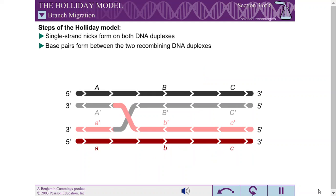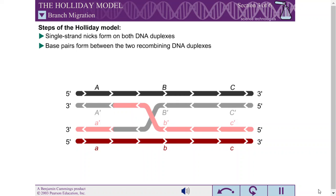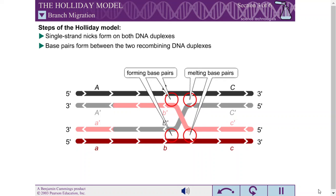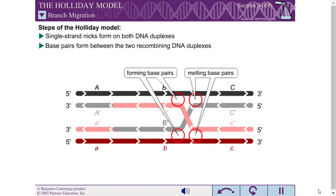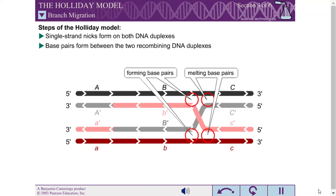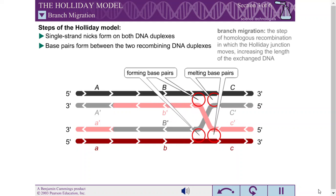The Holliday junction can move along the DNA by repeated melting and formation of base pairs. Each time the junction moves, base pairs are broken in the parental DNA molecules, and identical base pairs are formed in the recombination intermediate. This process is called branch migration.